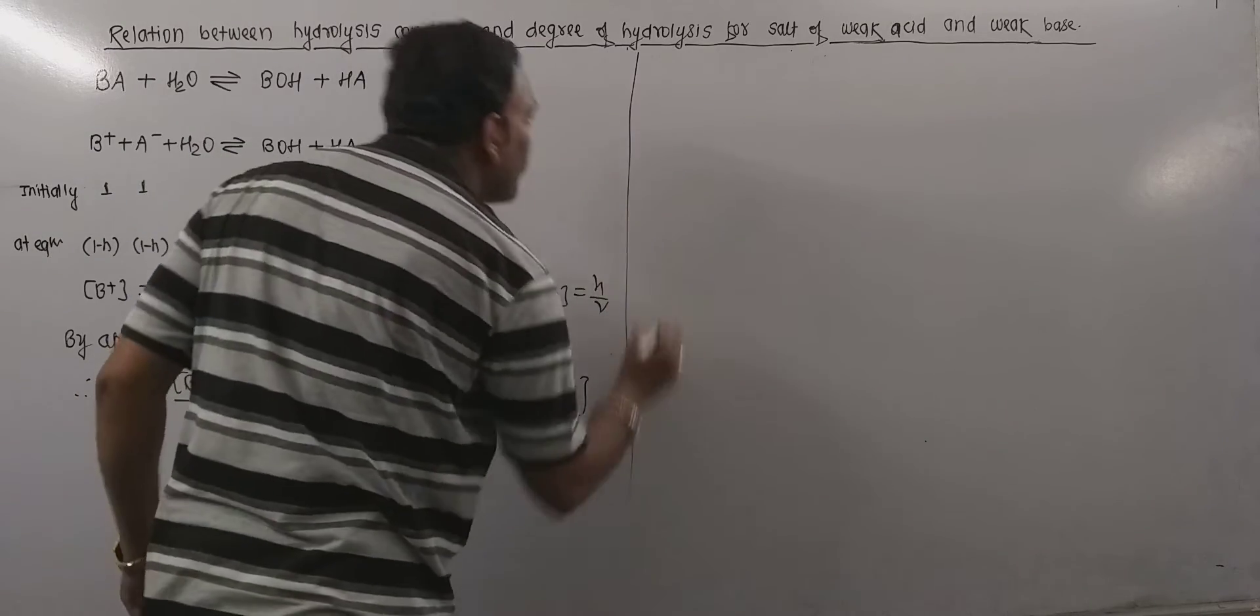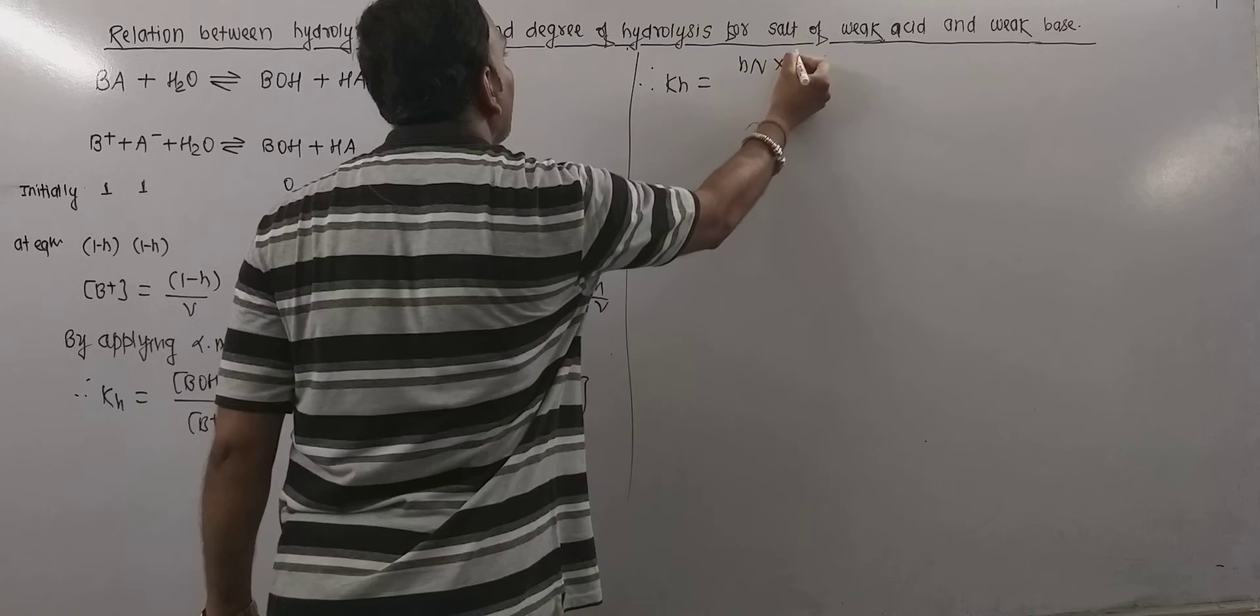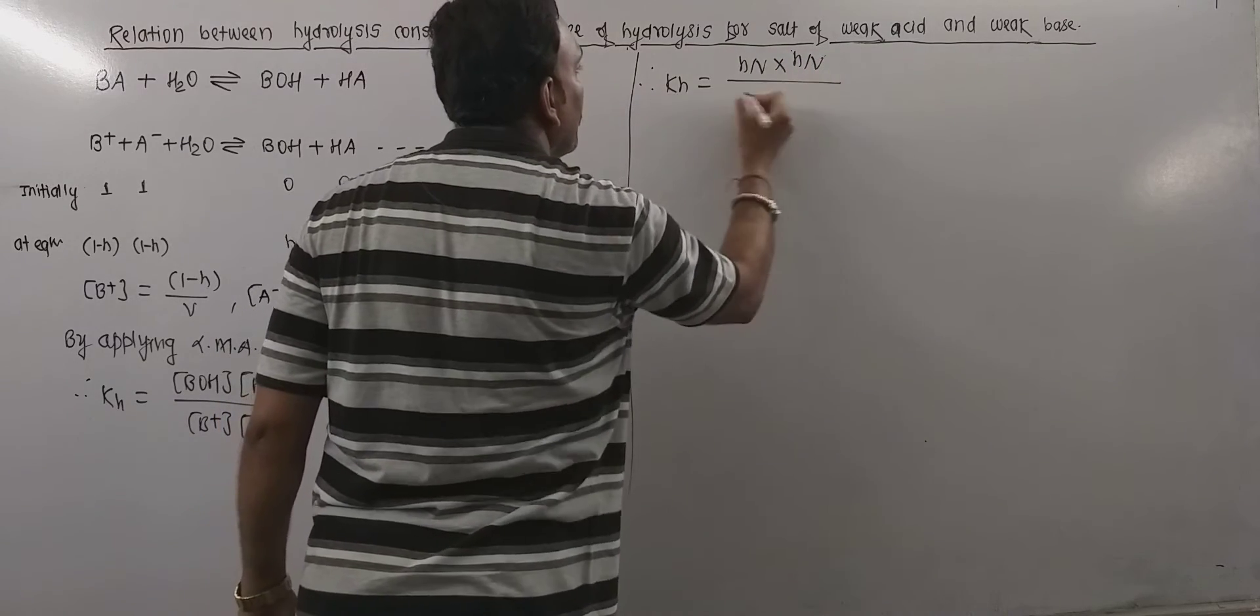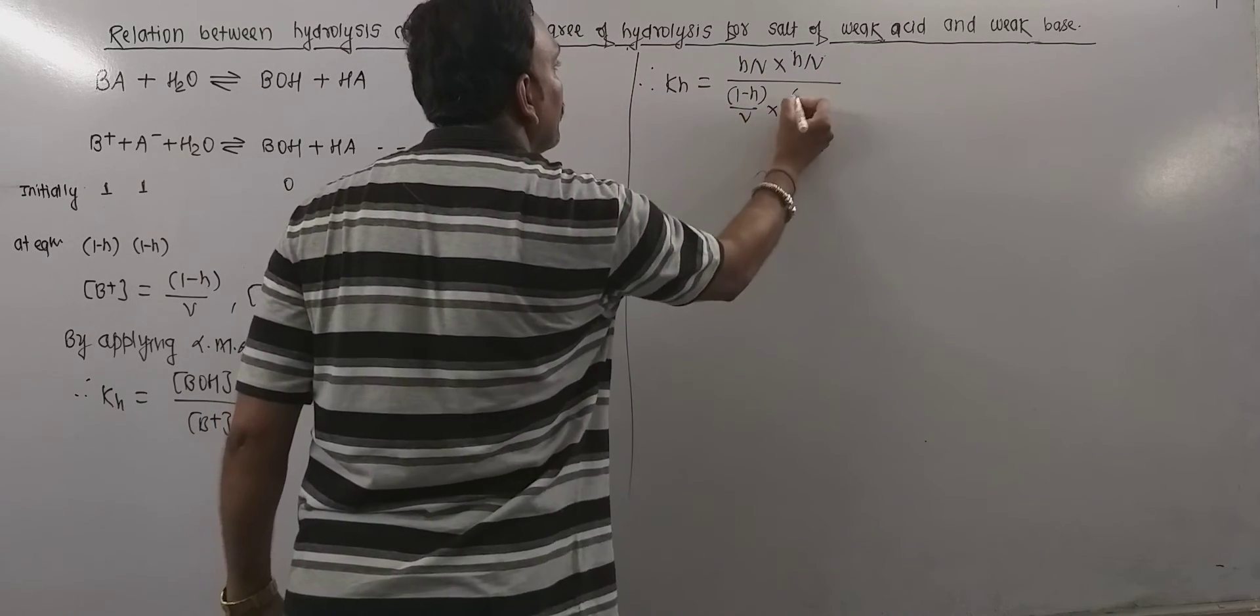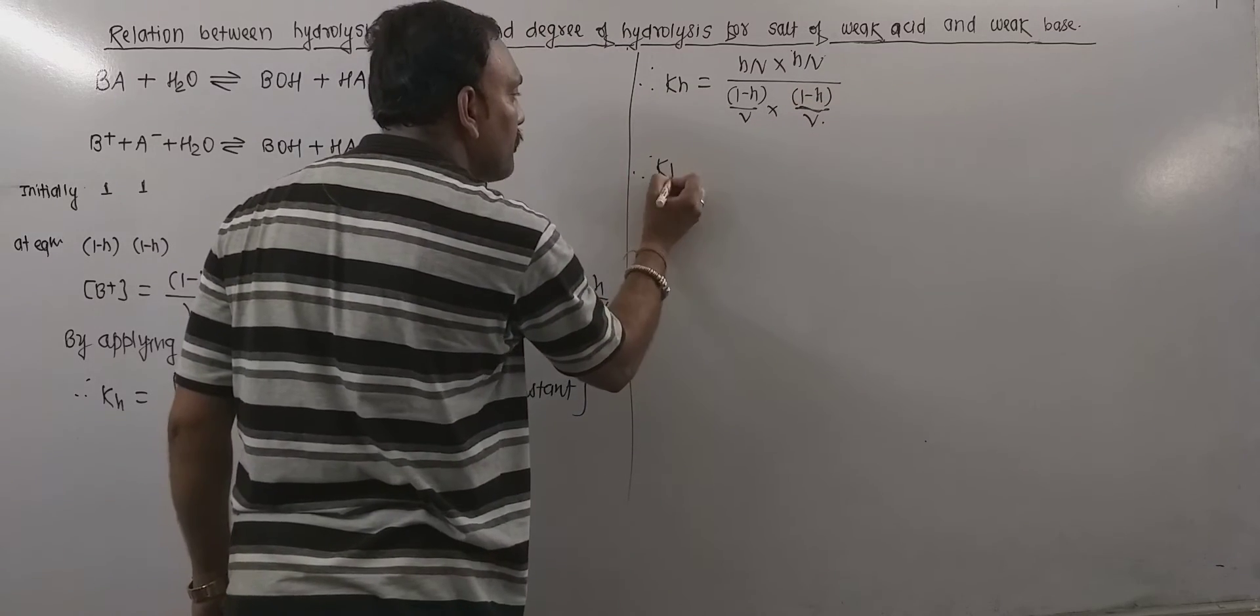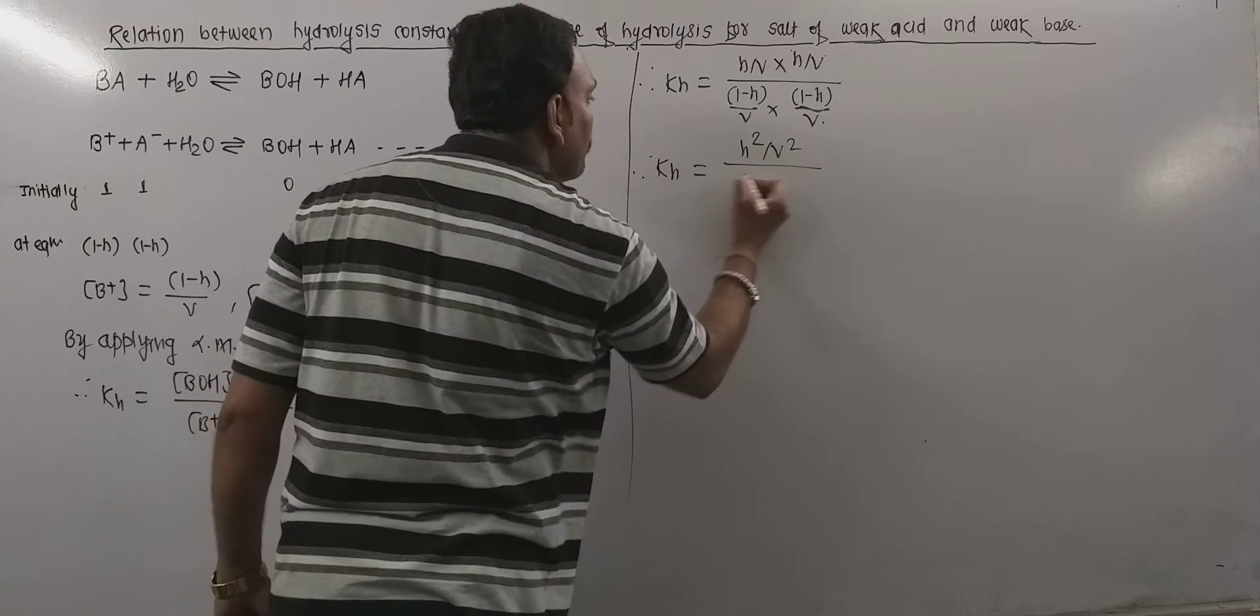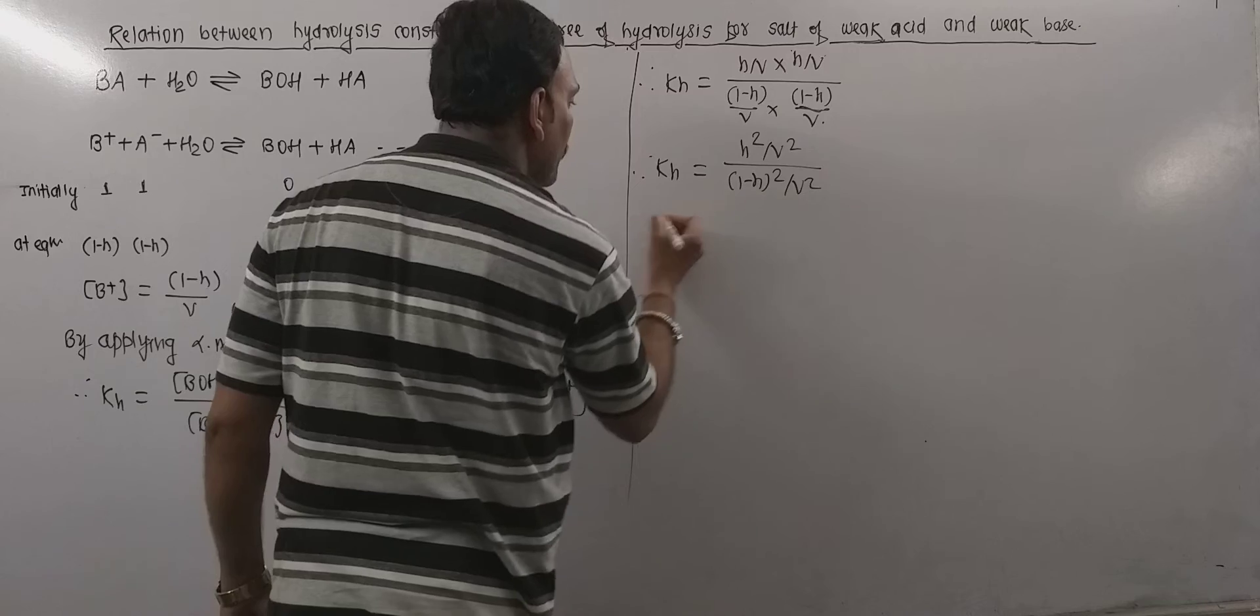Then we get KH equals (H/V) times (H/V) upon (1-H)/V times (1-H)/V. Now this can further be given as KH equals H²/V² upon (1-H)²/V².